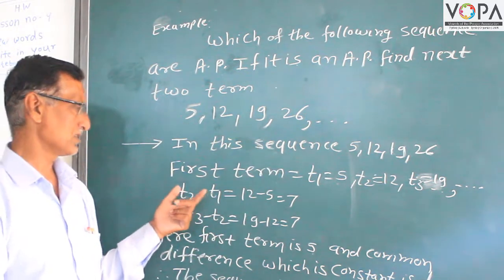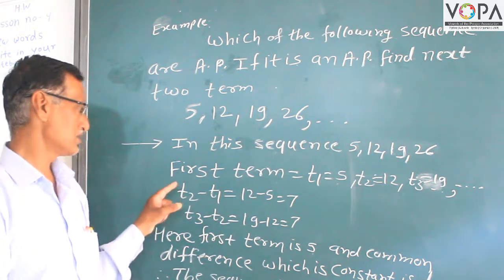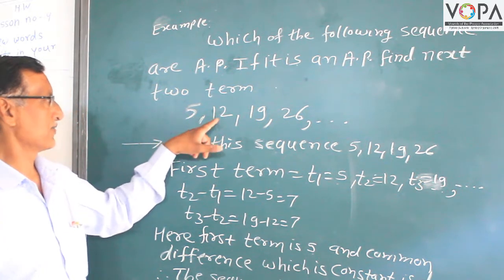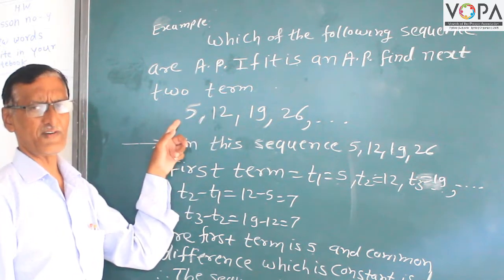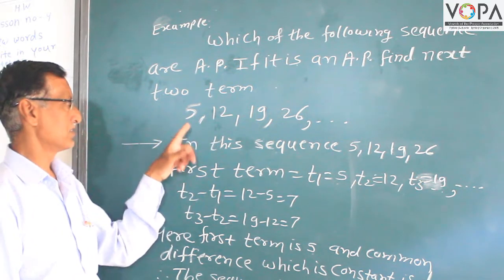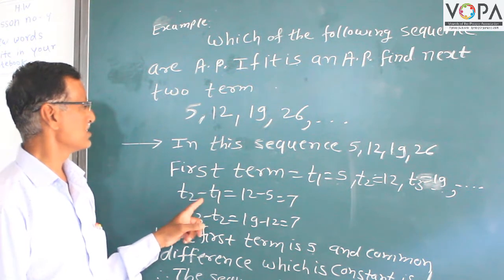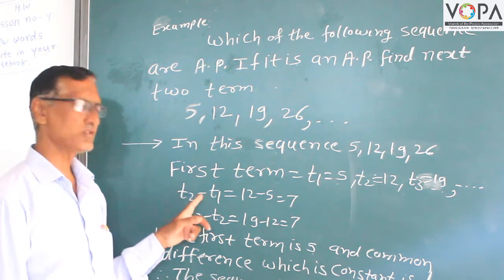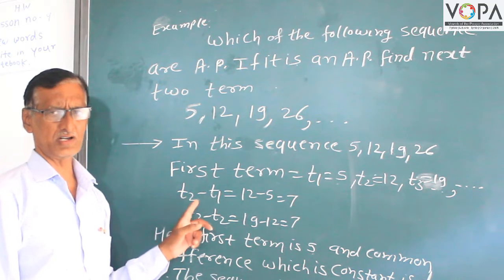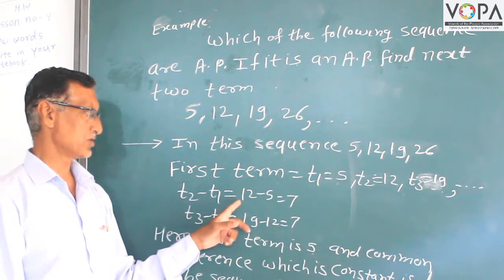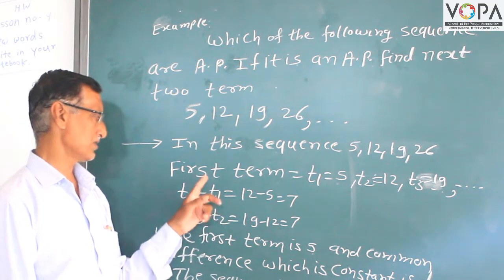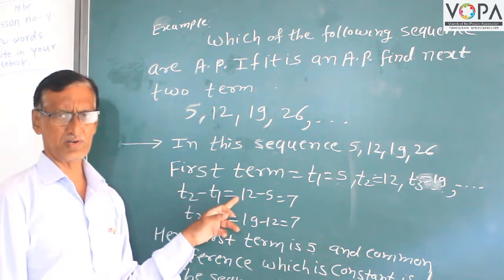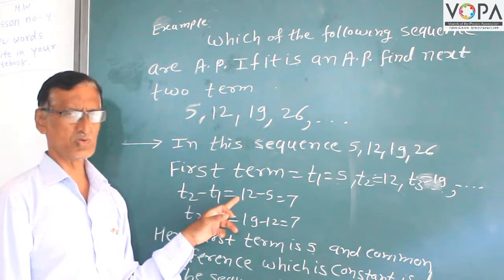The common difference is denoted by D, which equals T2 minus T1. T2 is 12 and T1 is 5, so T2 minus T1 means second term minus first term: 12 minus 5 is equal to 7.